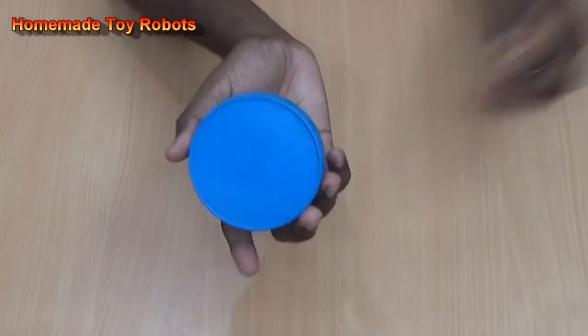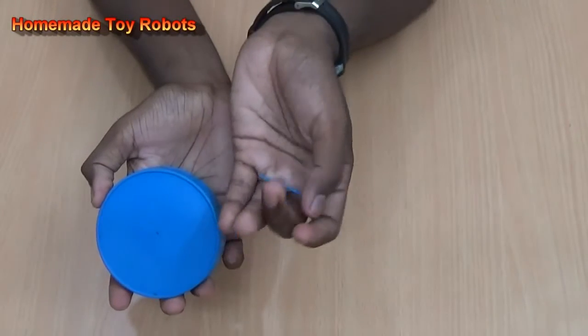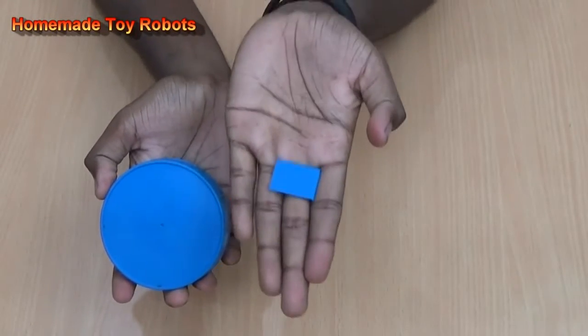First take the bottle cap and cut into a small size piece, to a small size.